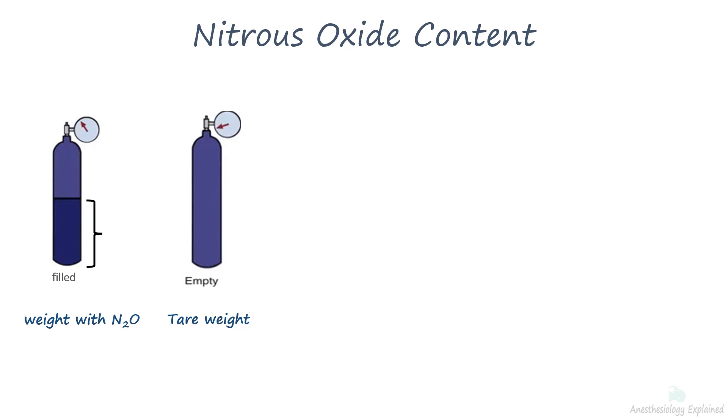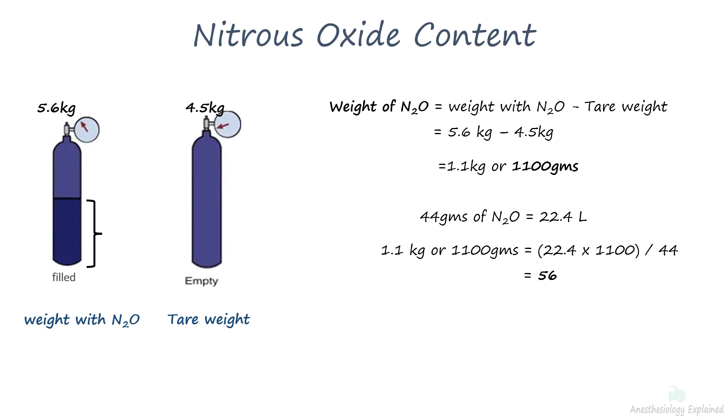For example, let's assume the weight of the cylinder with nitrous oxide is 5.6 kilograms and the tare weight of nitrous oxide cylinder is 4.5 kilograms. So the weight of nitrous oxide is 1.1 kilograms or 1100 grams. As per the Avogadro's hypothesis, 1 mole of nitrous oxide with molecular weight of 44 grams occupies 22.4 liters of volume. Therefore, the volume occupied by 1100 grams of nitrous oxide can be calculated as 560 liters.